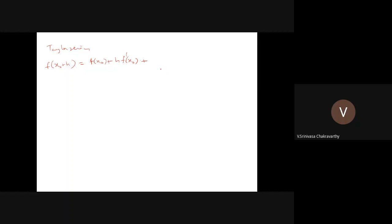Another example is the Fourier series. Any periodic function s(t) — where s(t) = s(t + T) for all t — can be expressed as a constant a₀ plus a sum from n=1 to infinity of c_n times cosine(n ω₀ t + φ_n). What we are doing is expressing an unknown function s(t) as a linear sum of a family of functions — the family being cosines at the fundamental frequency and all its harmonics.